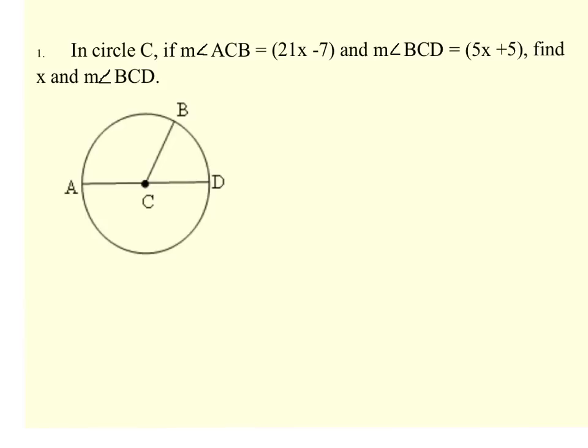and we are told that the measure of angle ACB is 21x minus 7. So this angle right here is 21x minus 7. And we are told that the measure of angle BCD, which is this angle right here, is 5x plus 5. What we want to do is find x and then plug that back in so we can find the measure of angle BCD.